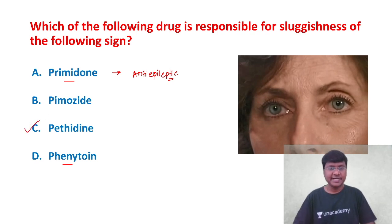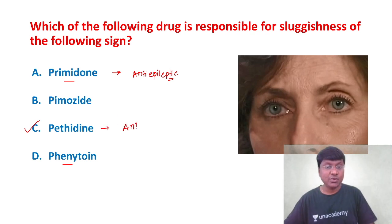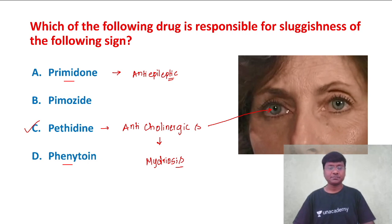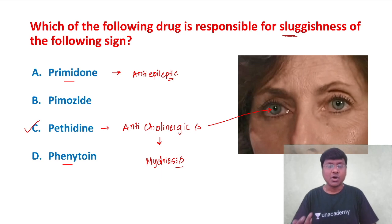Whereas if you take pethidine, the answer is pethidine here. Pethidine is an opioid analgesic, and it has anti-cholinergic action. Anti-cholinergics cause mydriasis, where there will be dilatation of the pupil. Because there will be mydriasis, that will cause sluggishness of this particular direct light reflex.